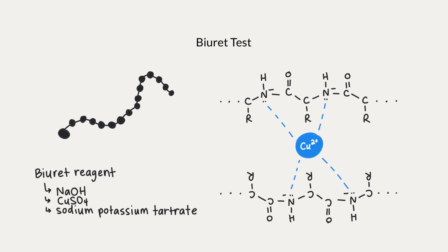The Biuret test is used to determine the presence of peptide bonds in solution. We add Biuret reagent, which is a solution made up of sodium hydroxide, copper sulfate, and sodium potassium tartrate. The sodium hydroxide gives it its alkaline property, and the sodium potassium tartrate stabilizes the copper ions. The principle is that in a strongly basic solution, the blue-colored copper ions form a complex with the peptide bonds. Once this complex forms, the solution goes from being blue to purple.